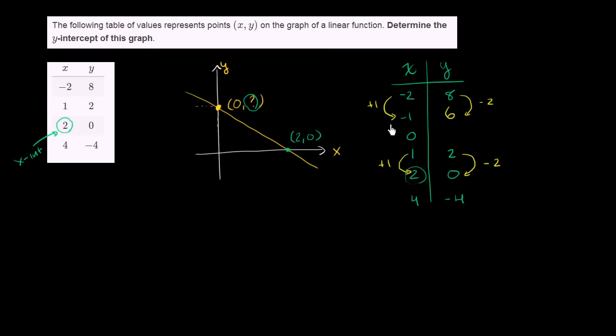So y is going to be 6 here. When x increases by 1 again, y is going to decrease by 2, so we're going to get to 4. And we see it works, because if we increase by 1 again, then it is indeed the case that y decreased by 2.